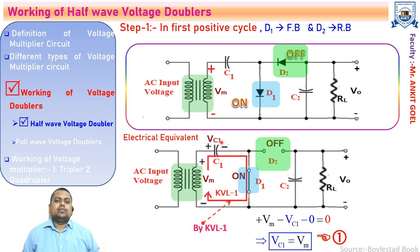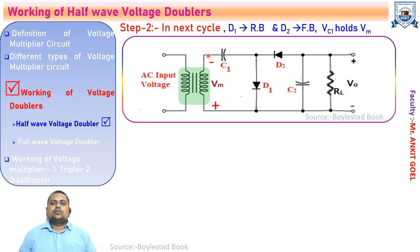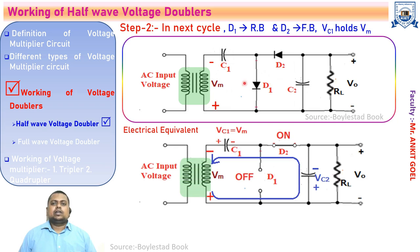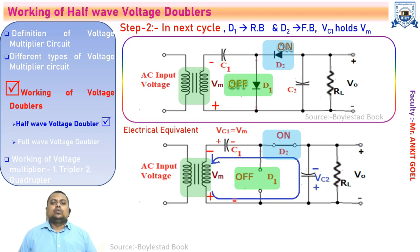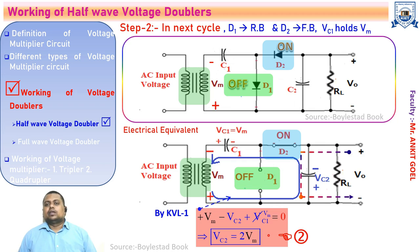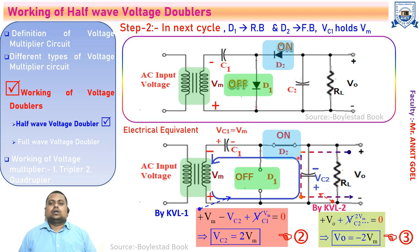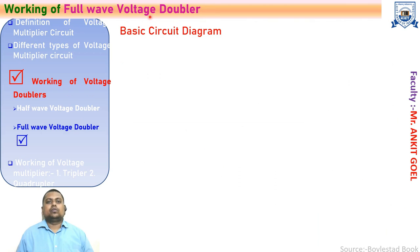In the next negative half cycle, the voltage across the secondary is reversed. Diode D2 is now in the forward bias state and diode D1 is in the reverse bias state. In the electrical equivalent circuit, D2 is replaced by a short circuit and D1 by an open circuit. Applying KVL in the outer loop through capacitors C2 and C1 gives the voltage across C2 as 2Vm. Applying KVL for the output loop gives VO = −2Vm. The magnitude across the output terminal is doubled, which is why it is called the half wave voltage doubler.